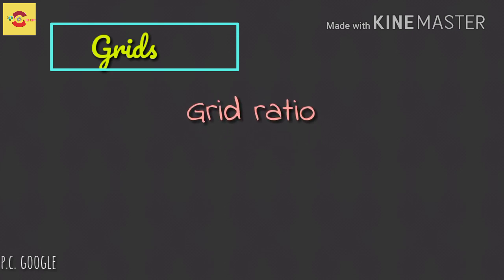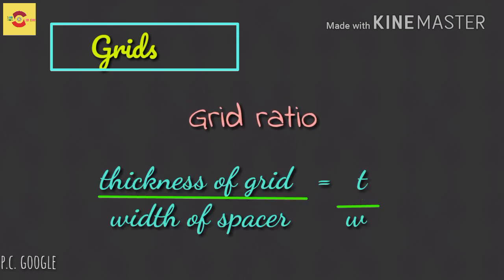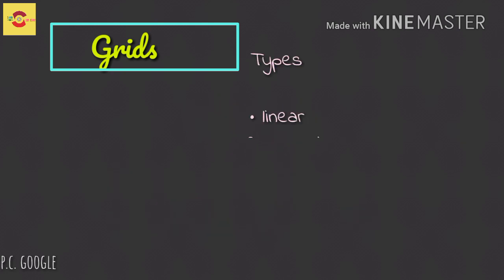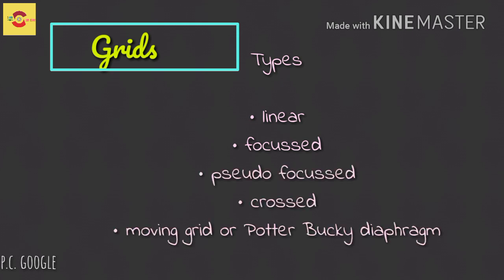Types of grid: the grid can be any one of the following types - linear grid, focused grid, pseudo focused grid, crossed grid, moving grid, or Potter Bucky diaphragm.